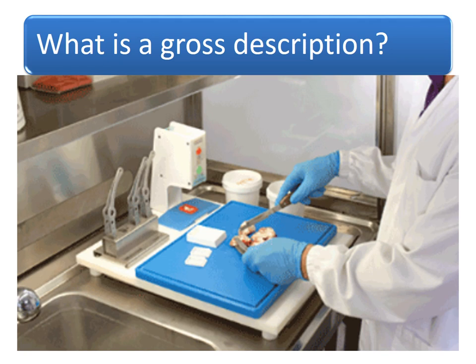What is a gross description? When we receive a specimen in the laboratory, we examine it with the naked eye and note its colour, consistency, and shape — whether normal tissue is present around it or the tumour is invading surrounding tissue, whether it is well encapsulated, and we also look at the history of the lesion removed. This is called gross description.